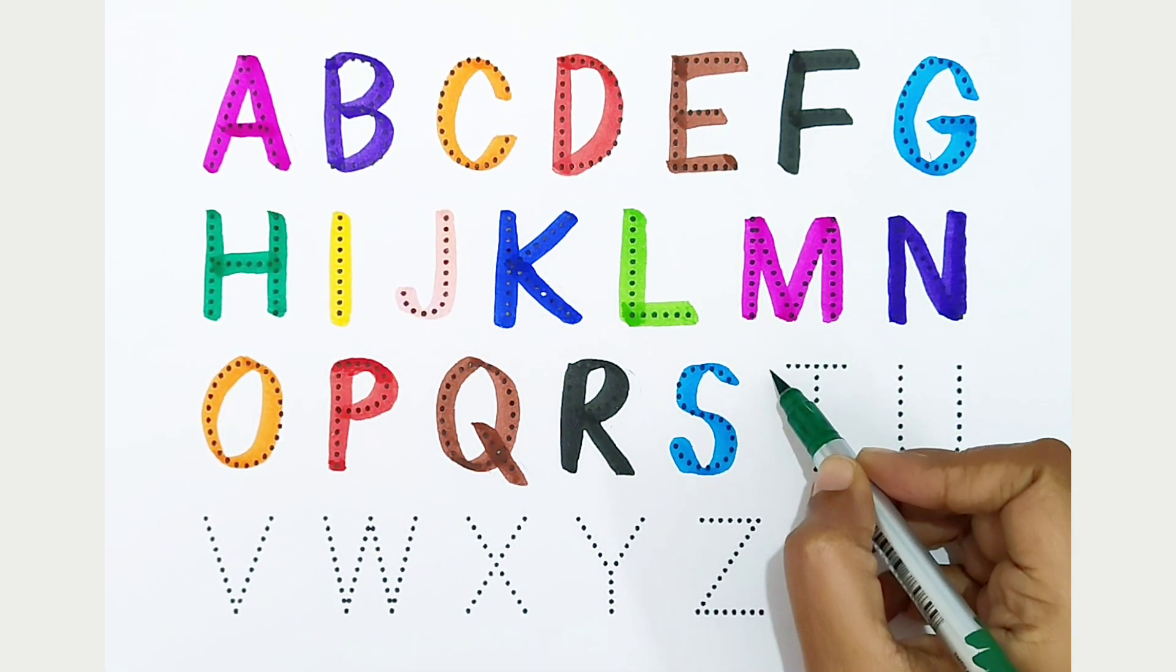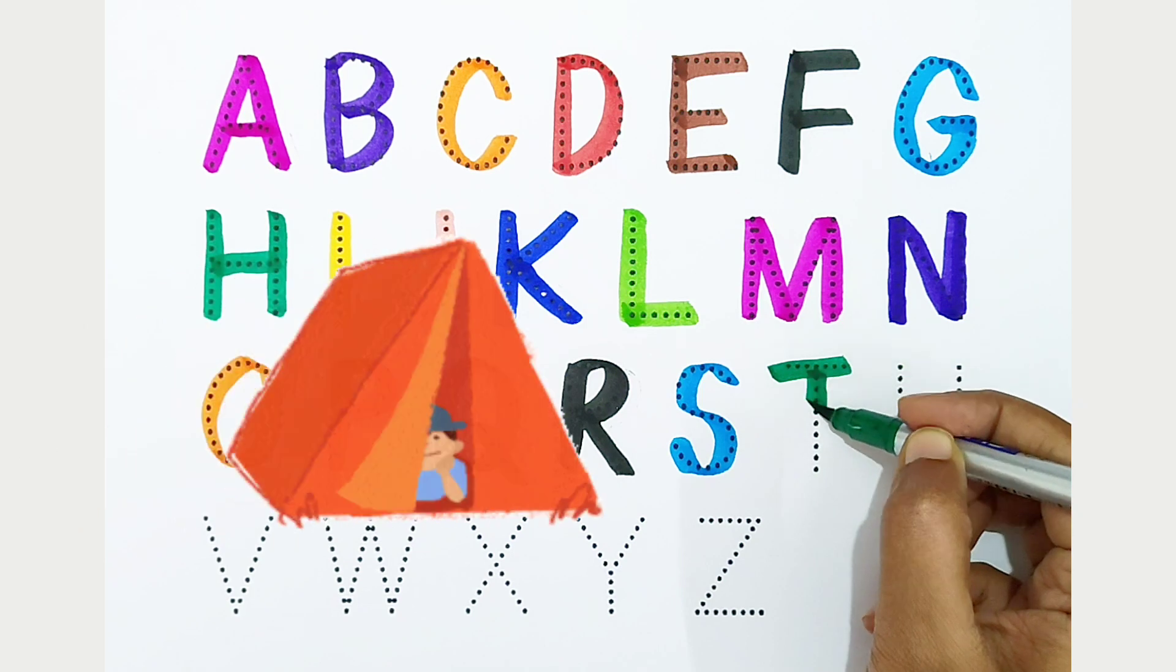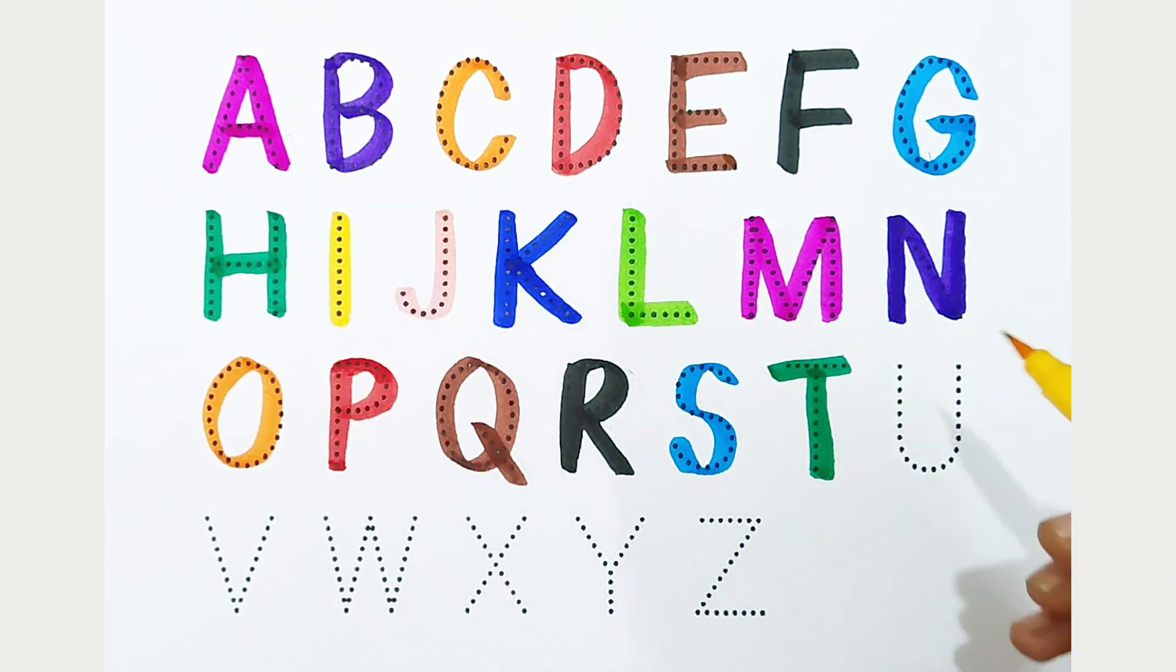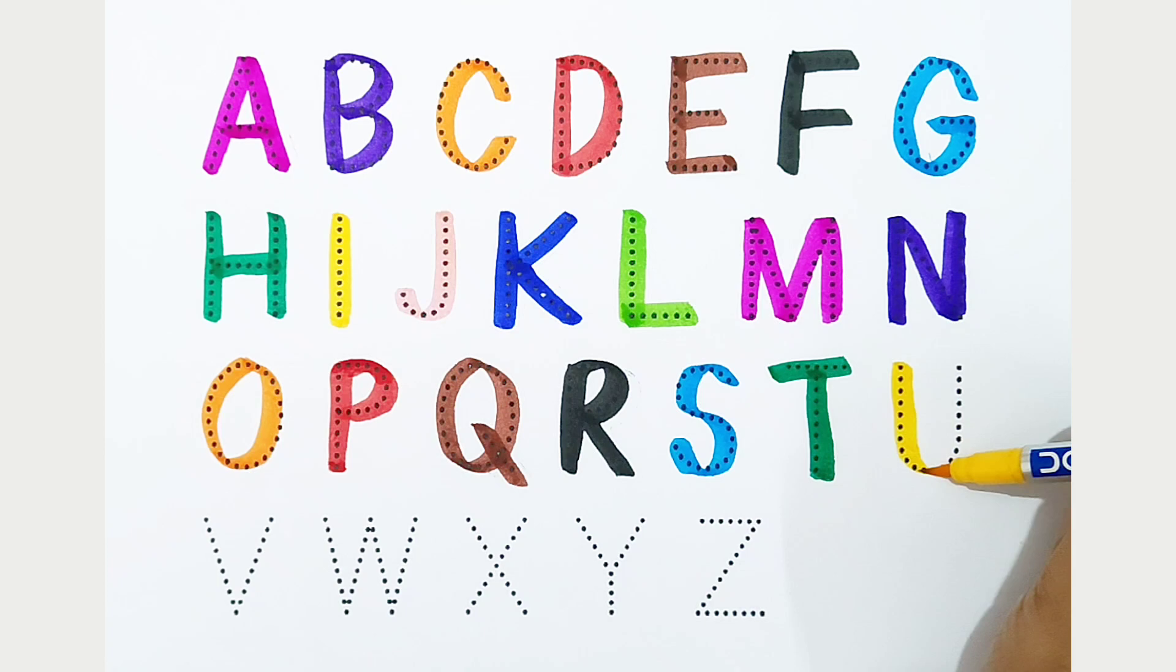T, dark green color, T is for tent. U, yellow color, U is for unicorn.